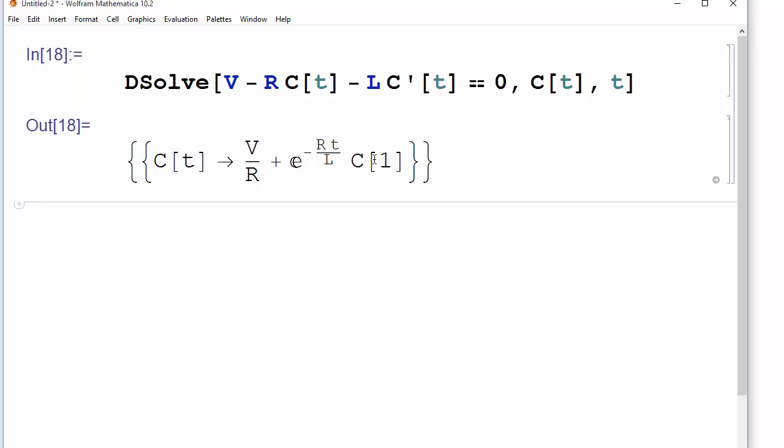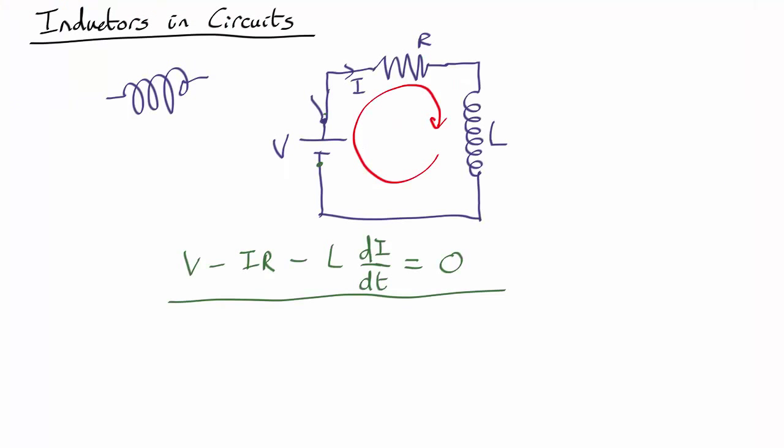So constant is minus V over R. So what that tells us is that the equation is actually I, we can go back to using I for current now, equals V over R times one minus E to the minus R over L times time. And that is what's happening here.